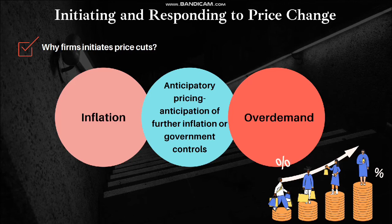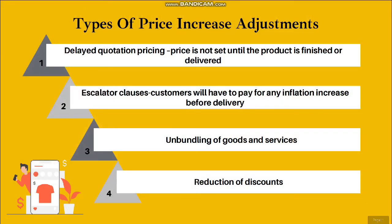Another reason is over demand, which occurs when the company cannot supply products to all customers who need them, causing the company to increase its price. There are four types of price increase adjustments: first, delayed quotation pricing — where the price is not set until the product is finished or delivered; second, escalator clauses — where customers pay for any inflation increase before delivery; third, unbundling of goods and services; and fourth, reduction of discounts.